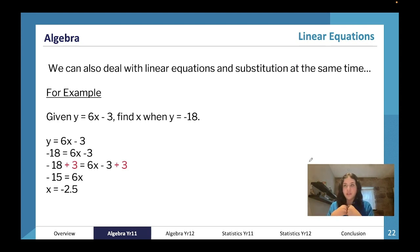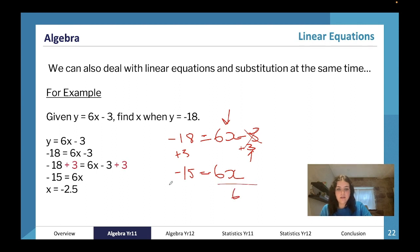We can also deal with linear equations and substitutions - those two things we just spoke about - at the same time. So given that y equals 6x minus 3, find x when y equals negative 18. So we're going to substitute negative 18 into our formula. So y equals negative 18, which then equals 6x minus 3. So now we want to find what x is. The first thing I'm going to do is move my 3 over by adding 3 to both sides. So add 3 here and it ends up cancelling itself out, add 3 here and I end up with negative 15 equals 6x. And now I just need to divide each side by 6 to get what x equals, which we get x equals negative 2.5.